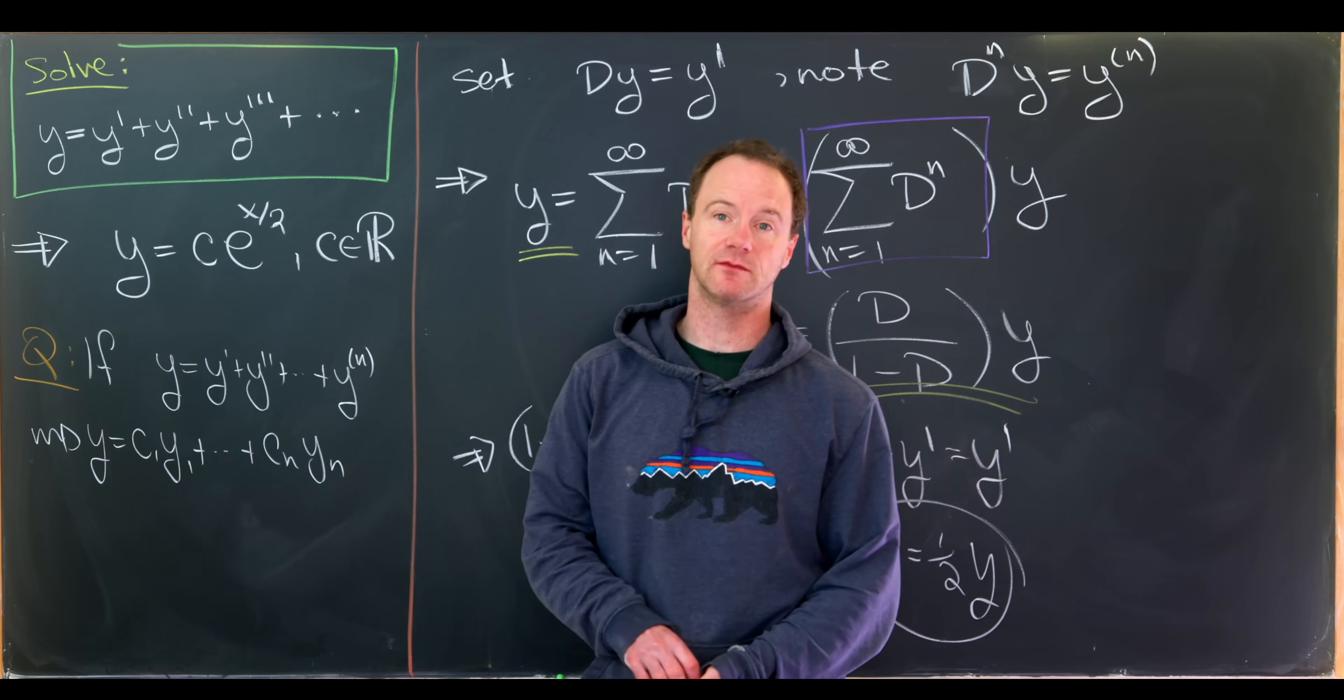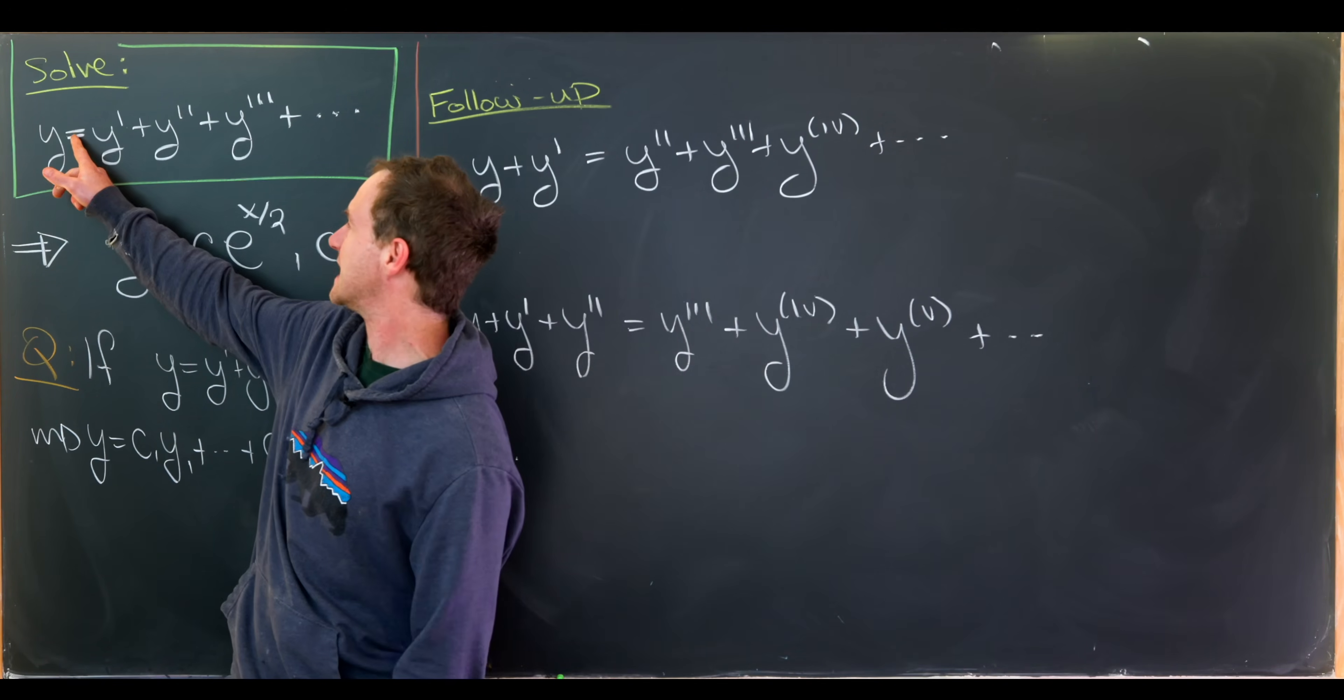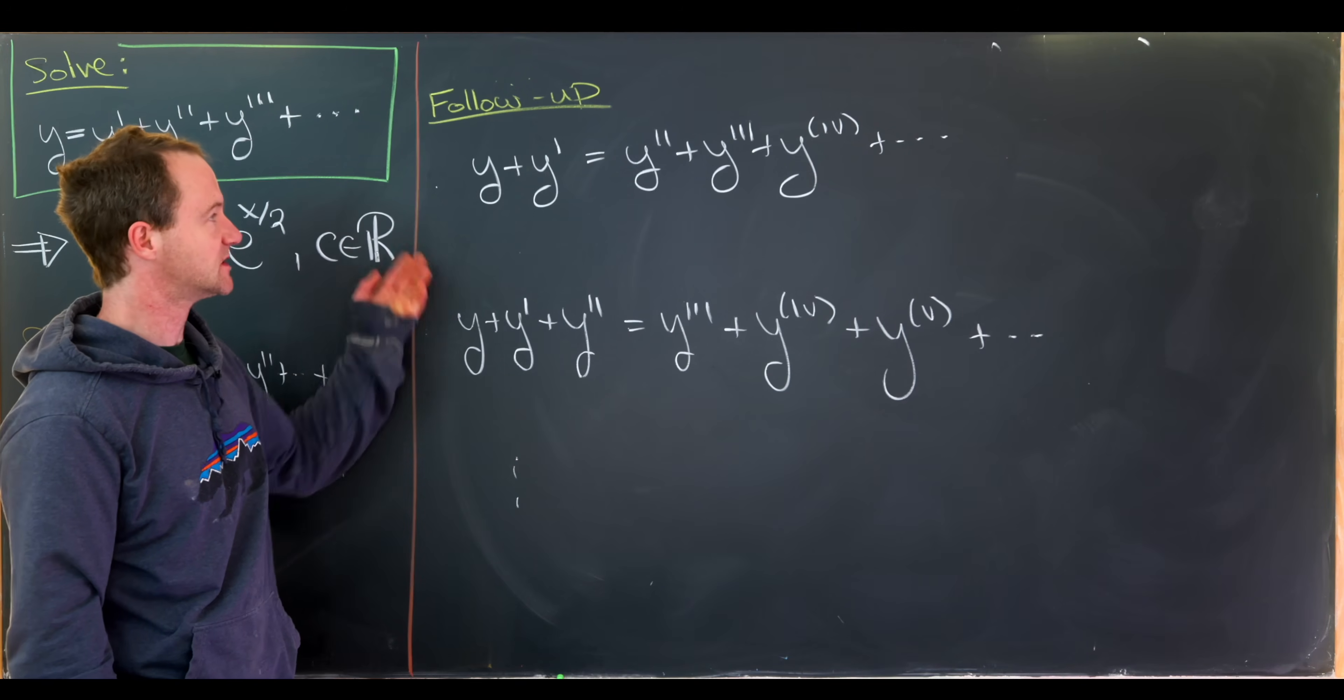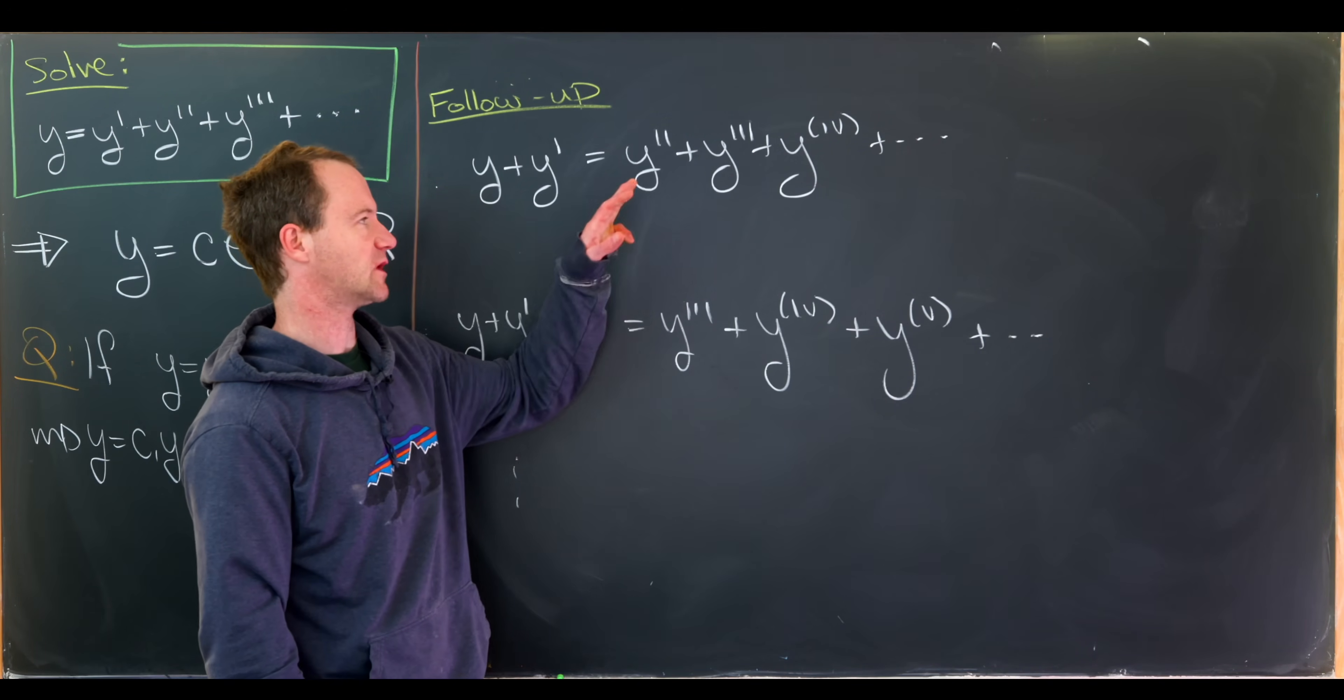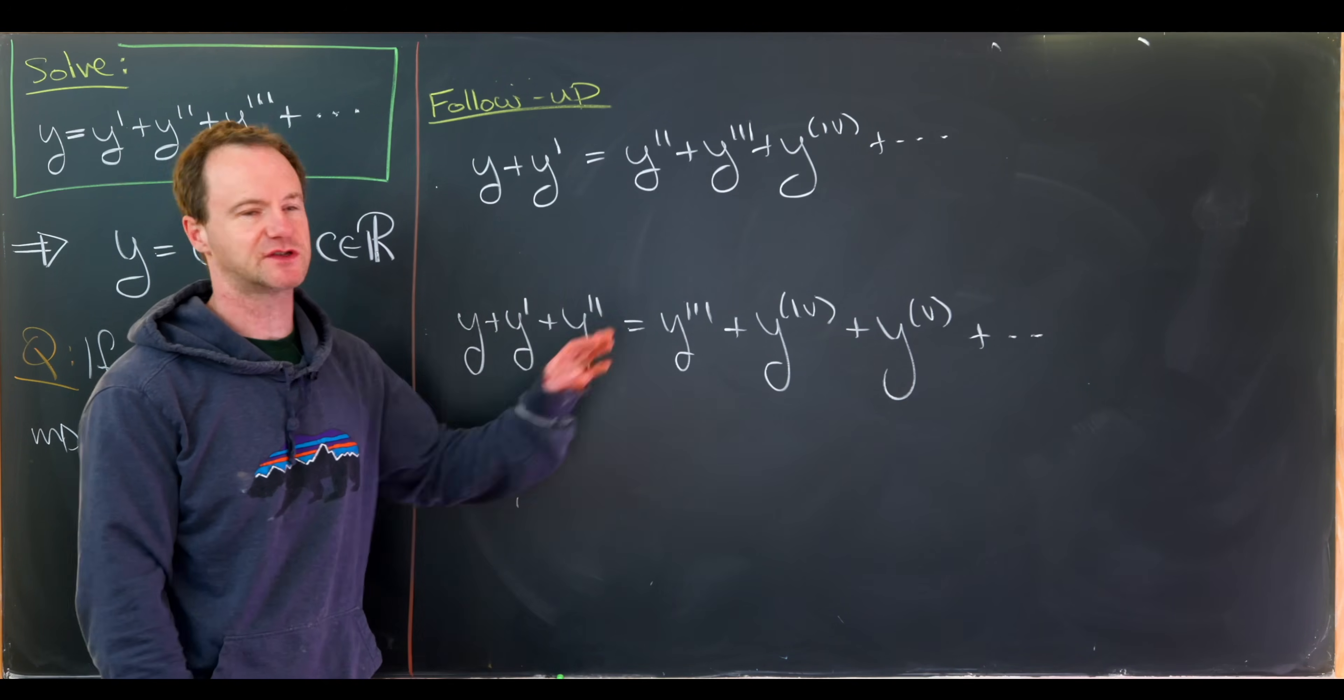I'll leave you with a follow-up to this problem. So what if instead of having y equals y prime plus y double prime so on and so forth, what if we take this equal sign and just put it somewhere else? So what I mean by that is look at something like this or something like this. We keep all of these functions in the same order but we just change where the equal sign is. So what about y plus y prime equals y double prime plus y triple prime plus y quadruple prime and so on and so forth. Or what about y plus y prime plus y double prime equals y triple prime quadruple prime quintuple prime and so on and so forth.